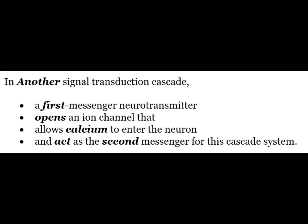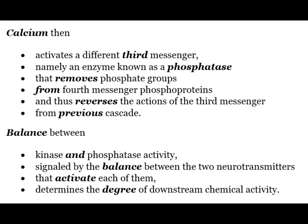In another signal transduction cascade, a first messenger neurotransmitter opens an ion channel that allows calcium to enter the neuron and act as the second messenger. Calcium then activates a different third messenger, namely an enzyme known as a phosphatase that removes phosphate groups from the fourth messenger phosphoprotein, reversing the action of the kinase. The balance between kinase and phosphatase activity determines the degree of downstream chemical activity.